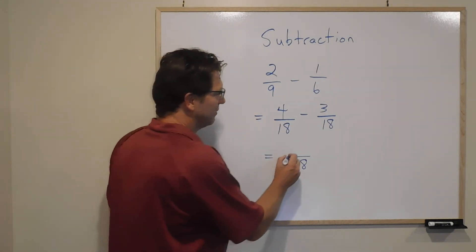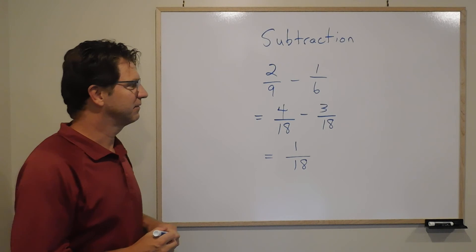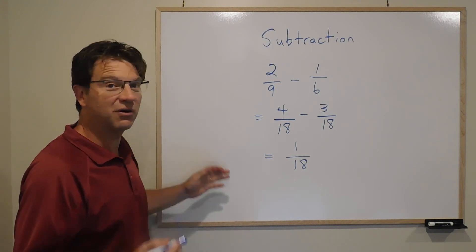So 4 minus 3. So this question would be 1 over 18, right? And if you're subtracting, that's the only difference.